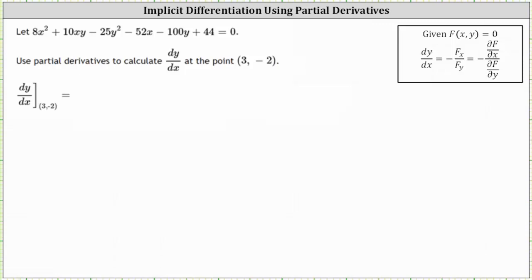We're given an implicit equation equal to zero, and we're asked to use partial derivatives to calculate dy/dx at the point (3, -2). Because the given implicit equation is in the form F(x, y) = 0, we can determine dy/dx by taking the opposite of the partial derivative of F with respect to x, divided by the partial derivative of F with respect to y.